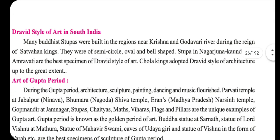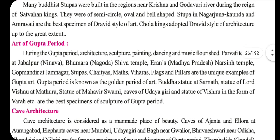Now, the Dravidian art of South India. Many Buddhist stupas were built near the Krishna and Godavari rivers during the reign of the Satavahana kings, and they were semi-circular, oval and well-shaped. The stupas in Nagarjunakonda and Amaravati are the best specimens of Dravidian art.